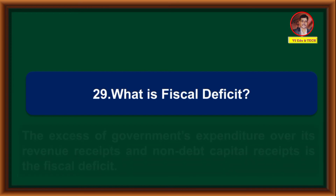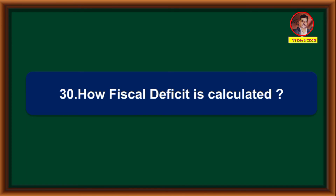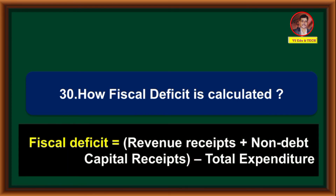What is fiscal deficit? The excess of the government's expenditure over its revenue receipts and non-debt capital receipts is called the fiscal deficit. How is fiscal deficit calculated? Fiscal deficit equals revenue receipts plus non-debt capital receipts minus total expenditure.